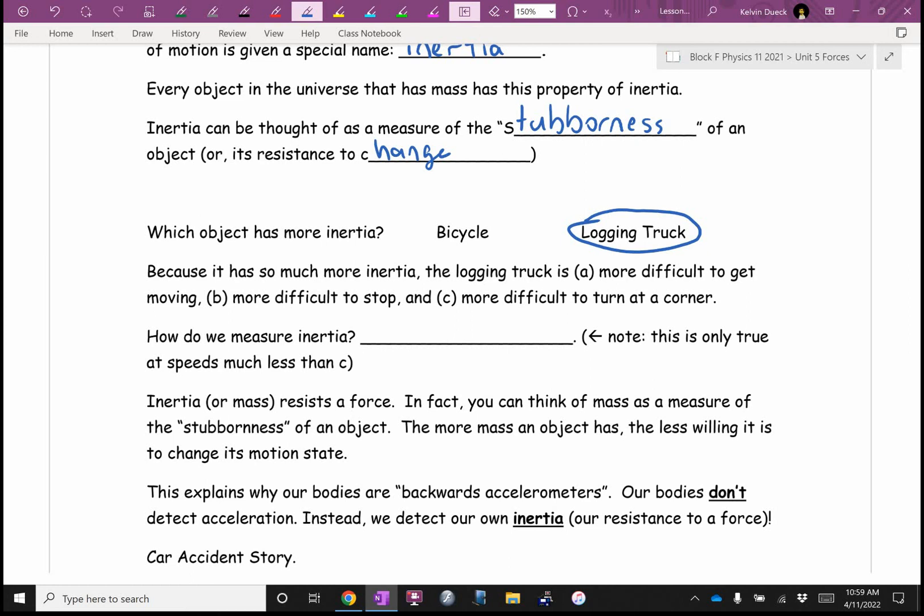So, how do we measure inertia? Mass. I just lied. That's only true as long as you're not going near the speed of light. Remember in the last unit, we learned that mass increases as you speed up? I fibbed. What I should have said was inertia increases. We call it your inertial mass. That increases as you speed up. But we're going to, for this unit, not be going anywhere near the speed of light. So, for this unit, we're going to pretend mass stays constant.